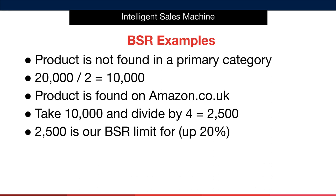Let's take some examples so you understand exactly what we're talking about. In this example, our item is not located in one of the three primary categories, so we take our base number of 20,000 and divide by two, giving us 10,000. Now we know we're researching Amazon UK, which means we must take that base BSR and divide by four, giving us a new BSR limit of 2,500.